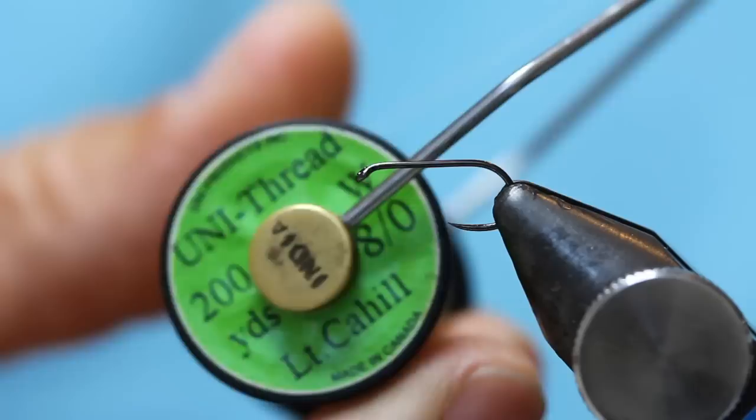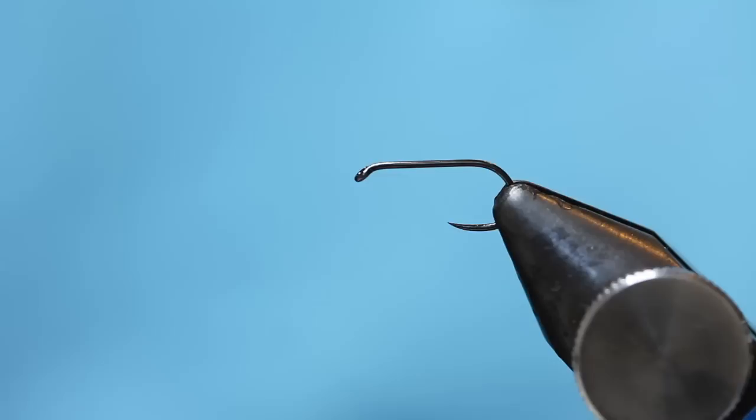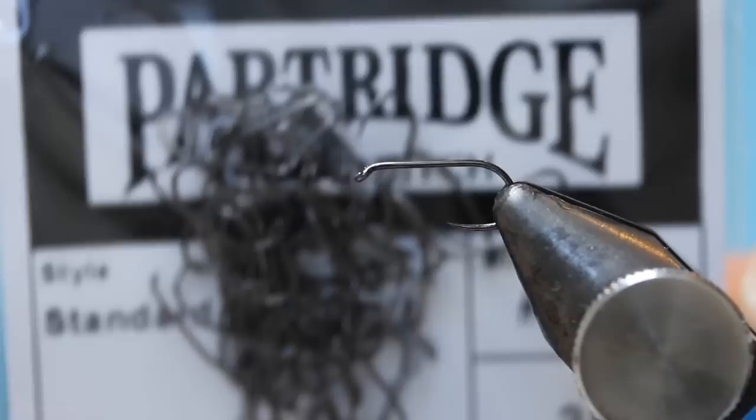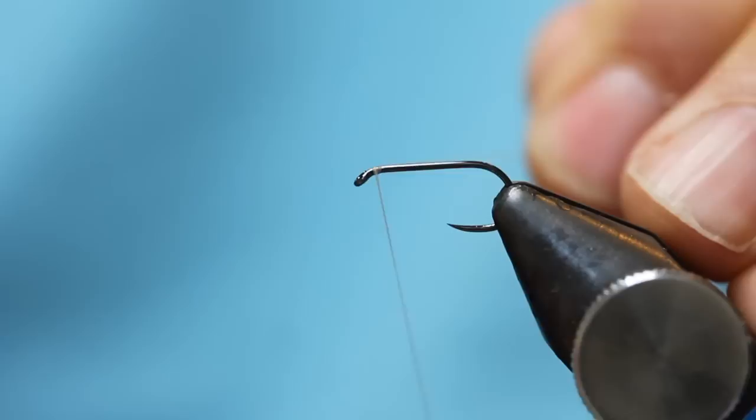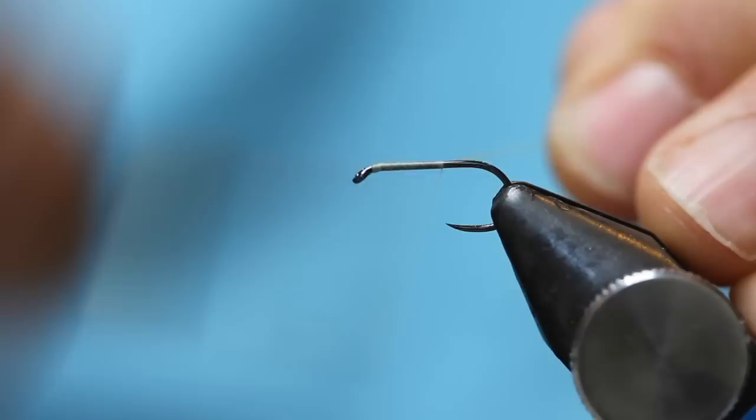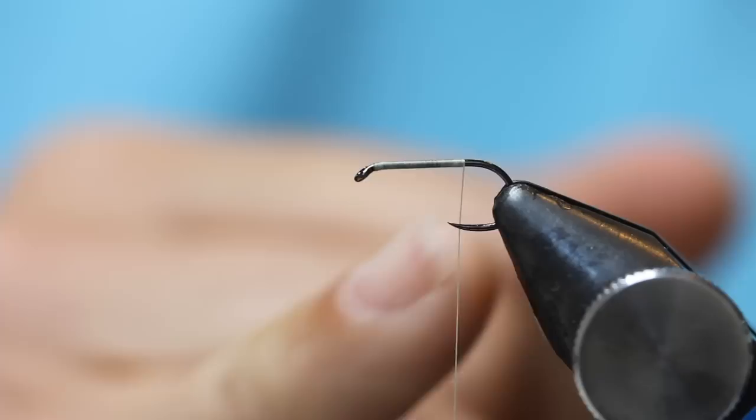It's a white Cahill. So, partridge patriot on the vise. Just wind down, just a bit beyond the hook shank. You can see where that's sitting there, just beyond the hook point.